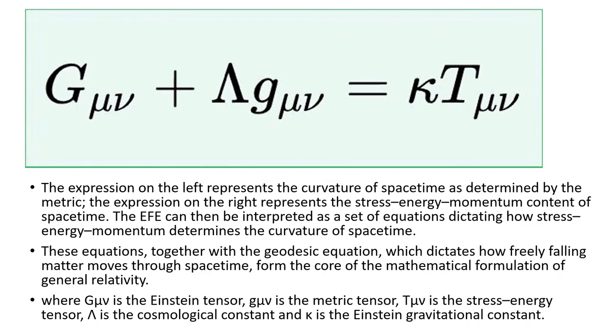The expression on the left represents the curvature of space-time as determined by the metric. The expression on the right represents the stress-energy-momentum content of space-time. The Einstein Field Equations can then be interpreted as a set of equations dictating how stress-energy-momentum determines the curvature of space-time. These equations, together with the geodesic equation, which dictates how freely falling matter moves through space-time, form the core of the mathematical formulation of general relativity.